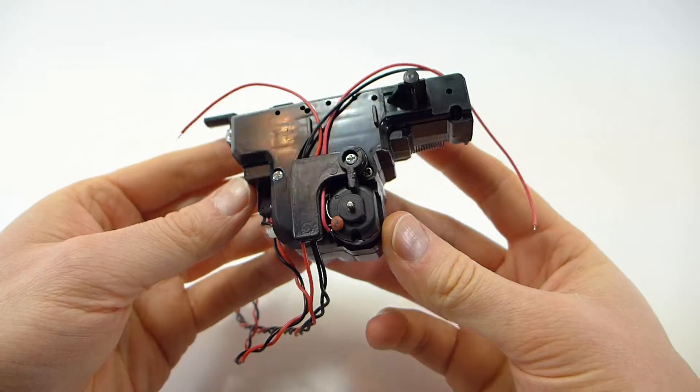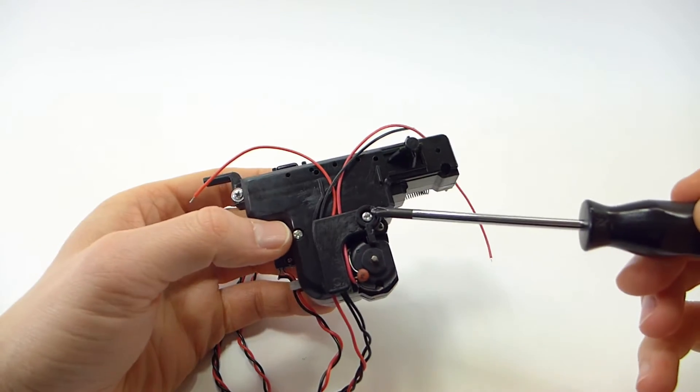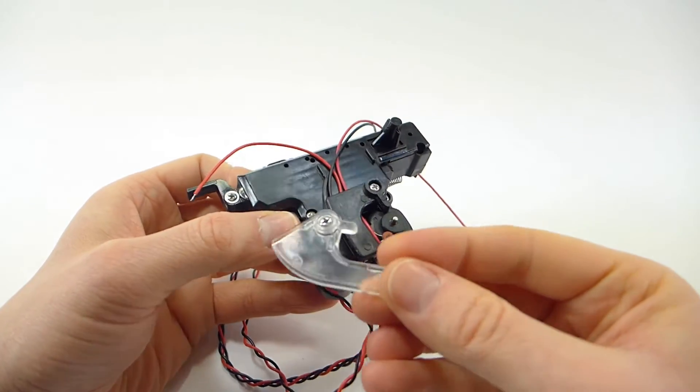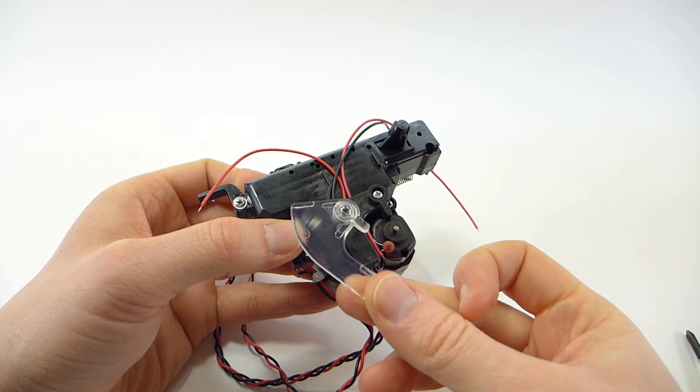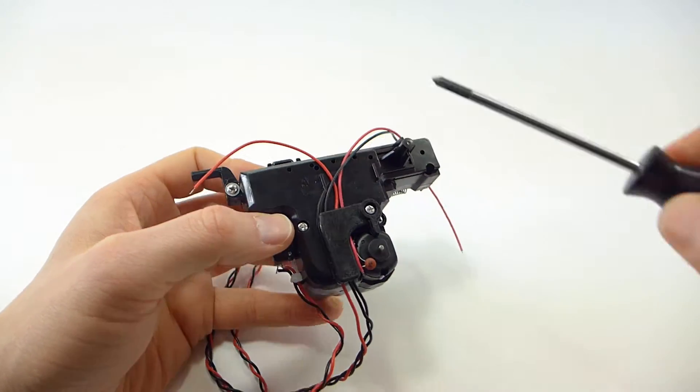Now the first step is to remove this little cover. Sometimes the cover is black as you can see here, or other times you'll have a clear cover. Either way, just unscrew it so we can get to the wires underneath.